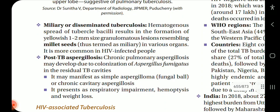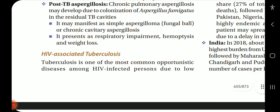Miliary or disseminated tuberculosis: hematogenous spread of tubercle bacilli results in the formation of yellowish 1–2 mm granulomatous lesions resembling millet seeds in various organs. It is more common in HIV-infected people. Post-TB aspergillosis: chronic pulmonary aspergillosis may develop due to colonization of Aspergillus fumigatus in residual TB cavities, manifesting as simple aspergilloma (fungal ball) or chronic cavitary aspergillosis, presenting with respiratory impairment, hemoptysis and weight loss.